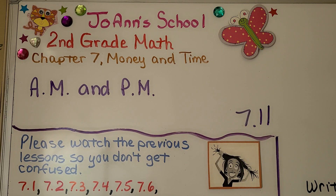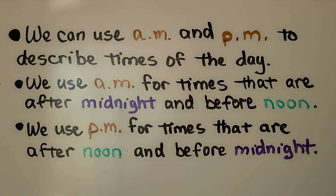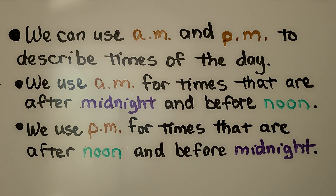Lesson 7.11: AM and PM. We can use AM and PM to describe times of the day. We use AM for times that are after midnight and before noon. We use PM for times that are after noon and before midnight.